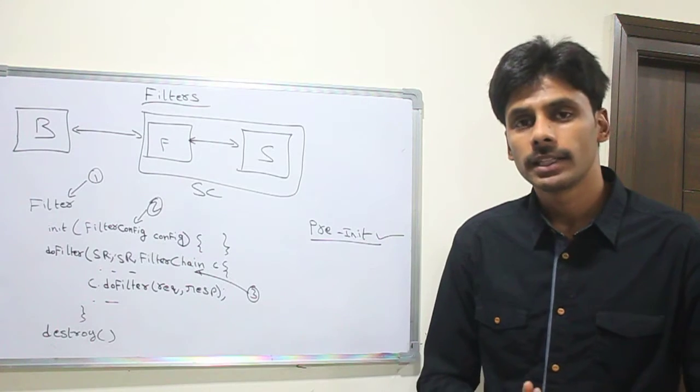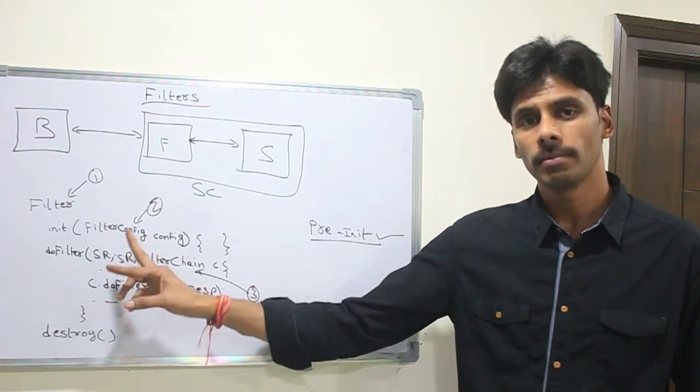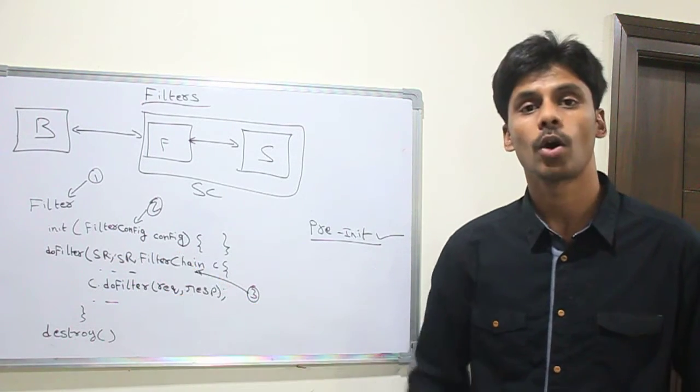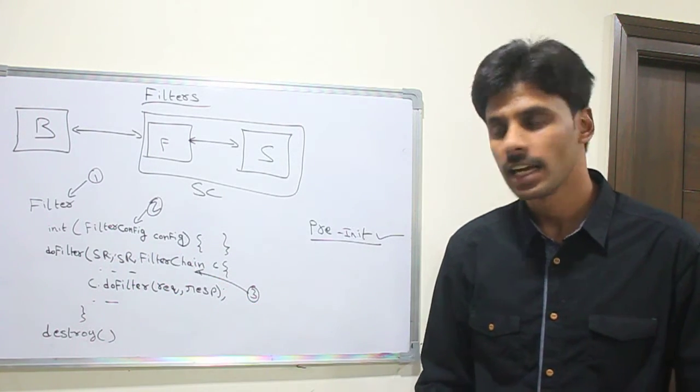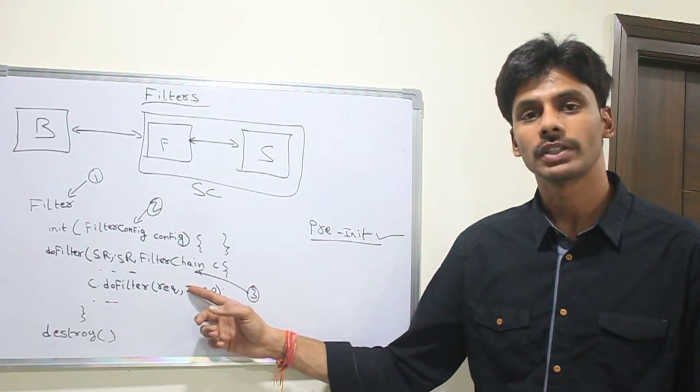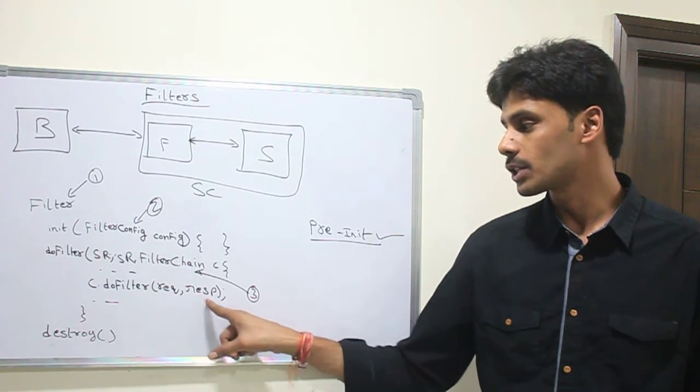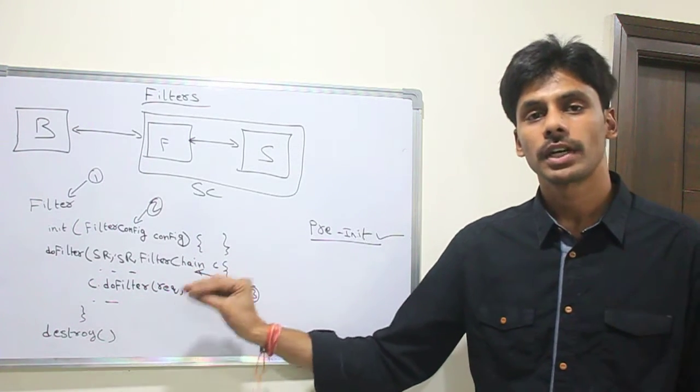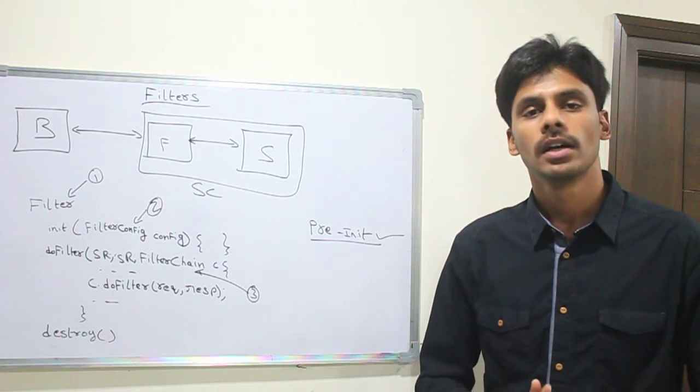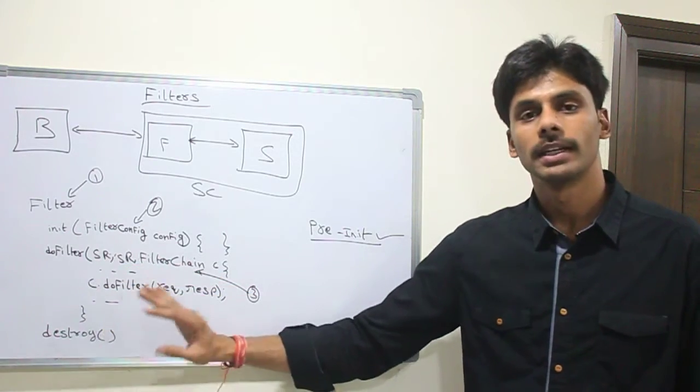The doFilter method is the key method that we implement, which has three parameters. You already know two of them: the servlet request, the servlet response. The third one is a new parameter called filter chain. So this filter chain, the container creates the instance of this filter chain at runtime. And when you say chain.doFilter request response, the request and response will be sent to the actual servlet which should serve the particular request after the logic you write in this doFilter method is executed.